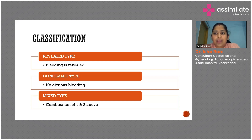On ultrasound, we can find a retroplacental collection. Especially in the concealed type, the clinical suspicion should be maintained. Only then will we be able to make a correct diagnosis.